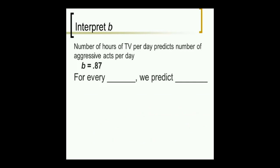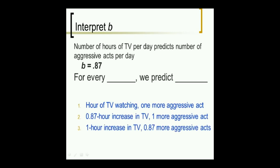Here's another one. The number of hours TV per day predicts the number of aggressive acts per day. B of 0.87. For every one hour increase in TV watching, we predict 0.87 more aggressive acts. It's okay that we took something unitary and discrete like an aggressive act and we made a 0.87. It's silly in reasonable terms, but it works with the math and that's what the regression equation says. The regression equation just needs to tell us what the line looks like.